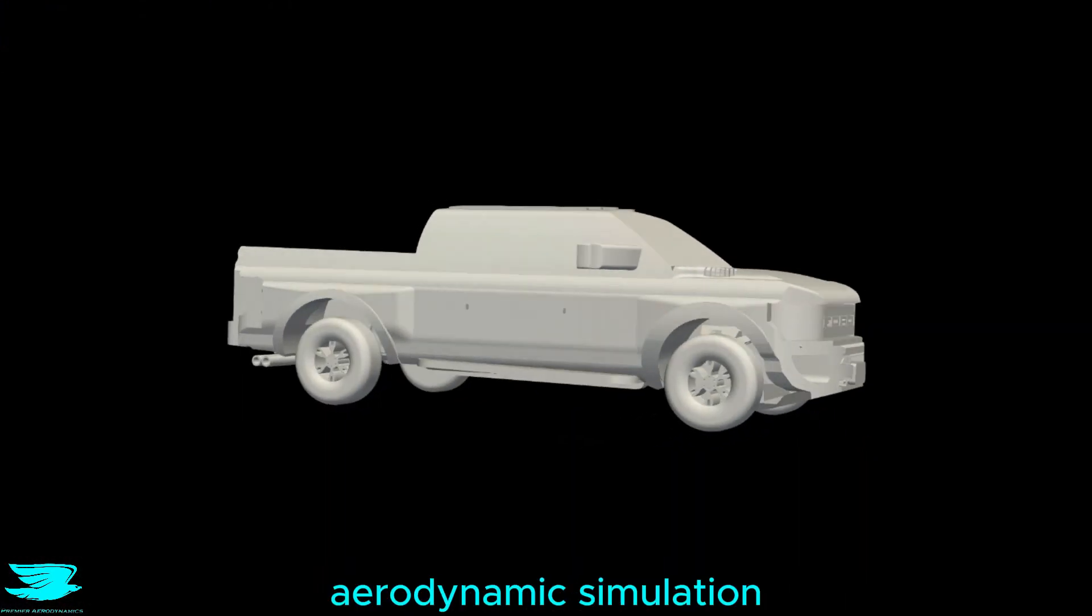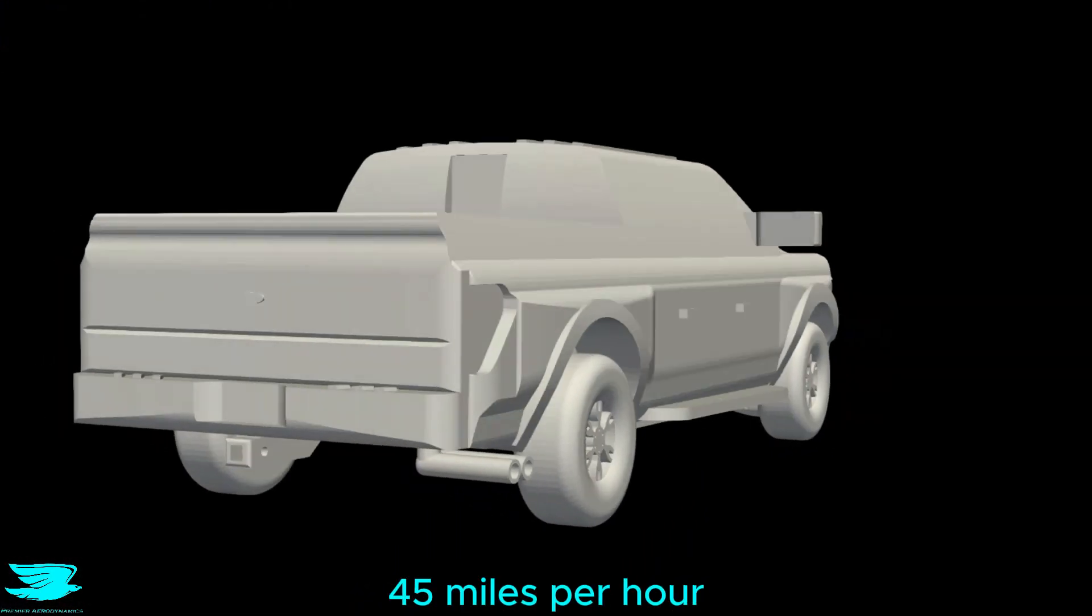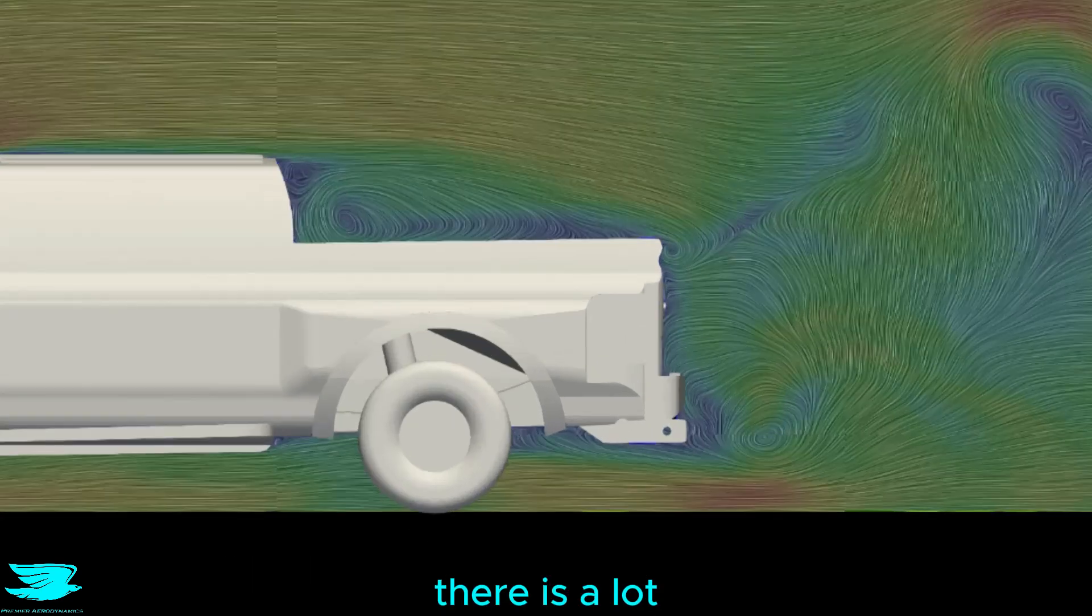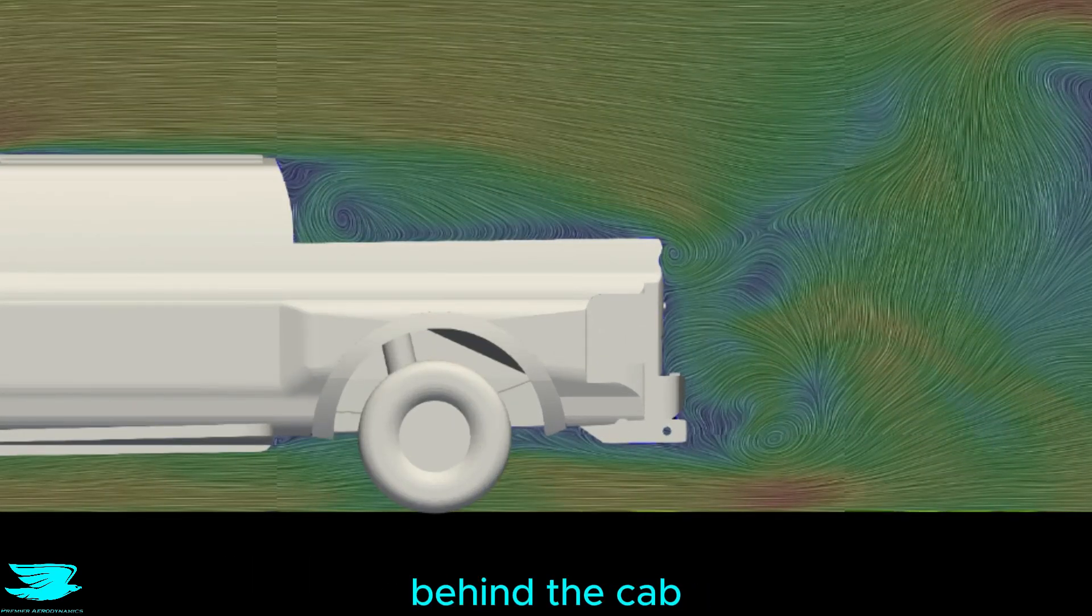To find out, we did an aerodynamic simulation of one. It's rolling at 45 mph. This plane shows that, as expected, there is a lot of flow separation behind the cab and behind the bed.